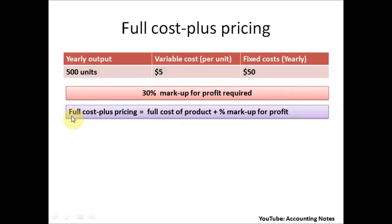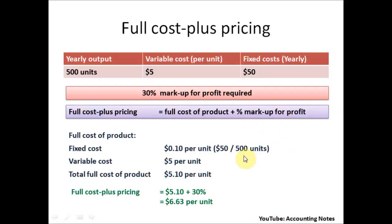To recap, the full cost plus pricing is calculated by taking the full cost of the product and adding the percentage markup for profit. So let's get started.